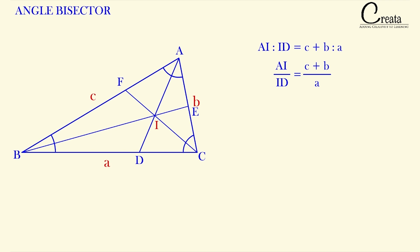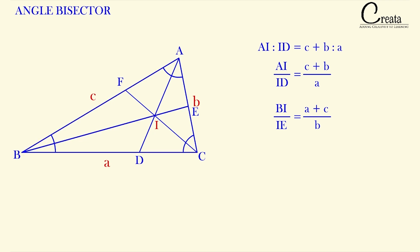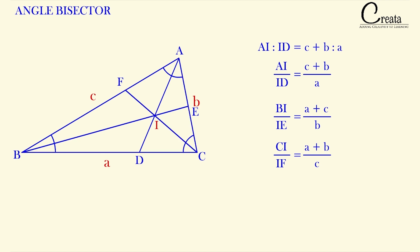If we take the angle bisector BE, the formula changes: BI : IE = (a + c) / b. Similarly, for angle bisector CF, the formula is CI : IF = (a + b) / c. This is the general formula for the ratio in which the incenter divides each angle bisector.